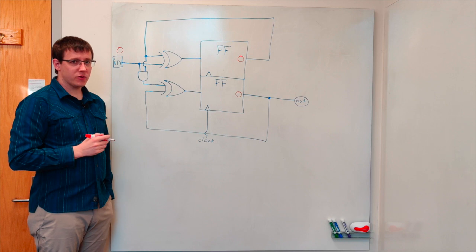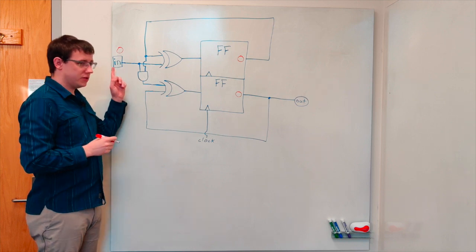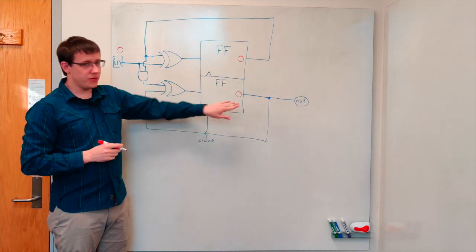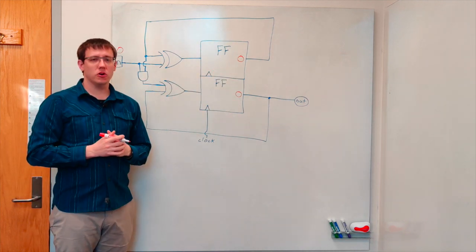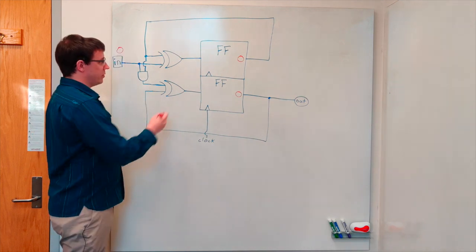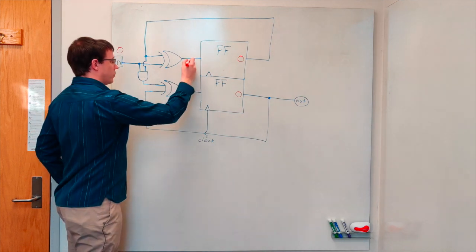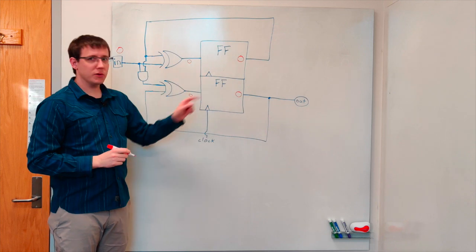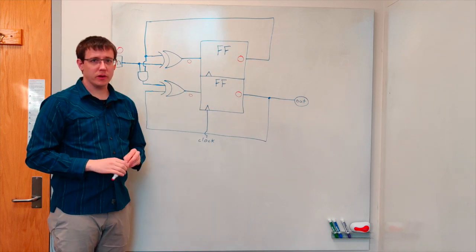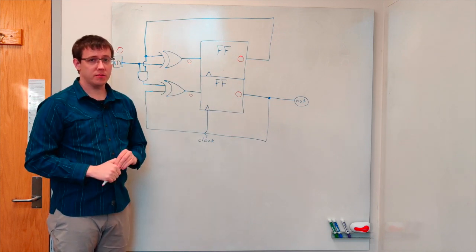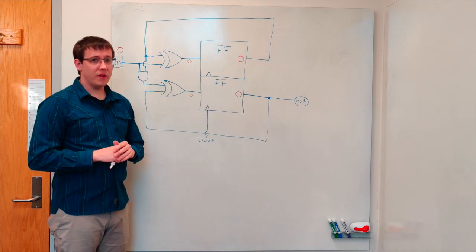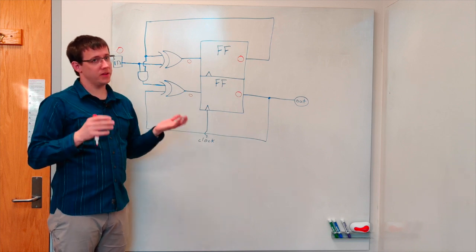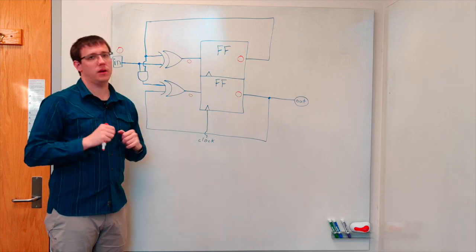Let's first consider the case where the input to the circuit is zero and both of the flip-flops are currently storing a zero. In this case, both of the XOR gates will compute a zero, and so a zero will be stored back into the flip-flops. That means on the next clock cycle, the state of the circuit will be the same as on the current clock cycle.